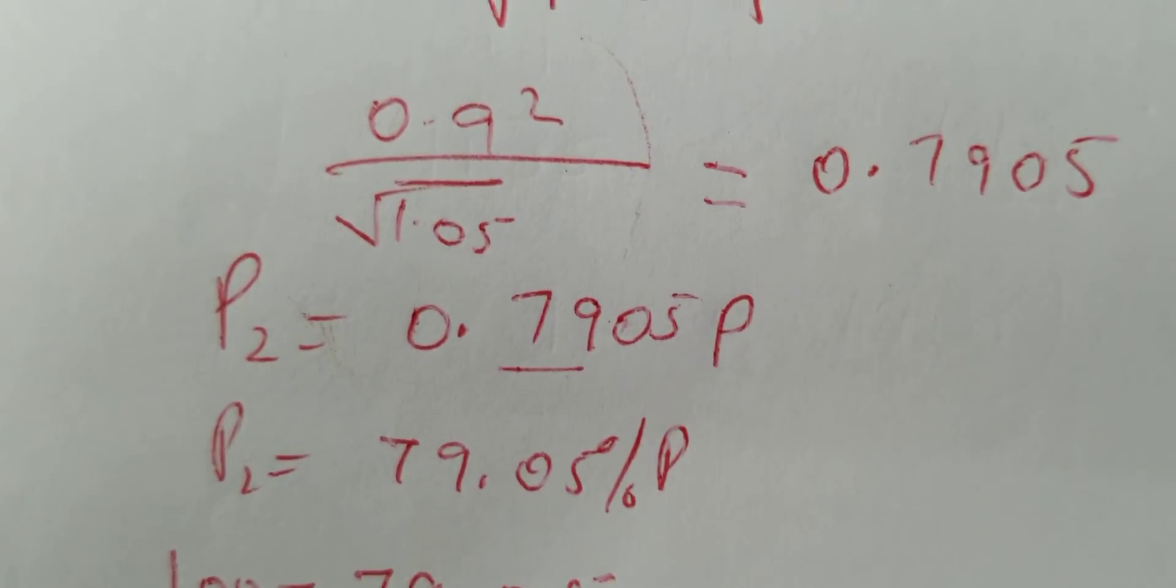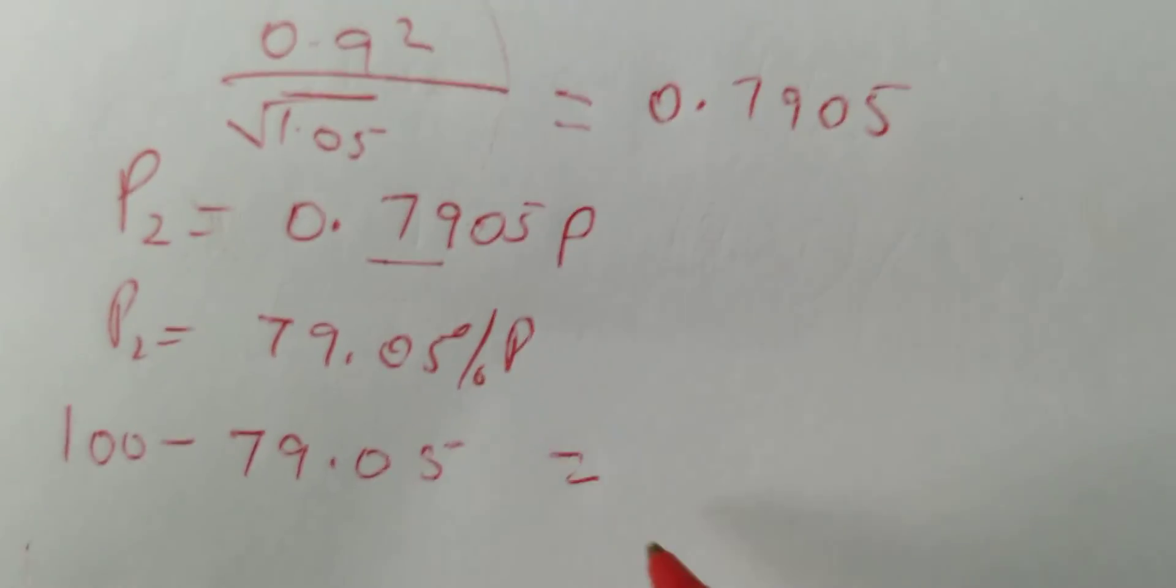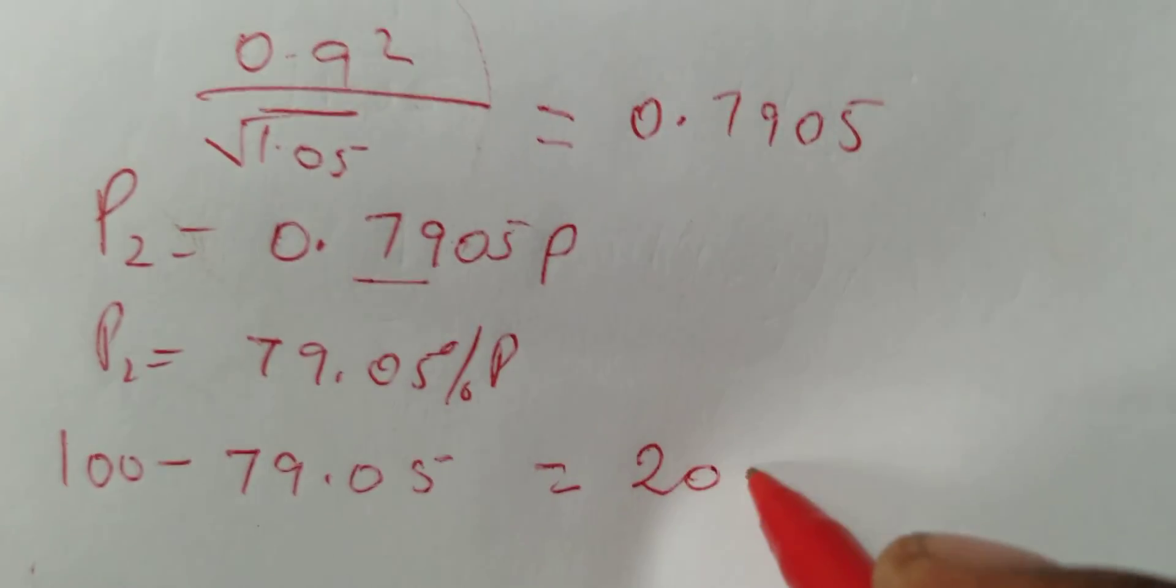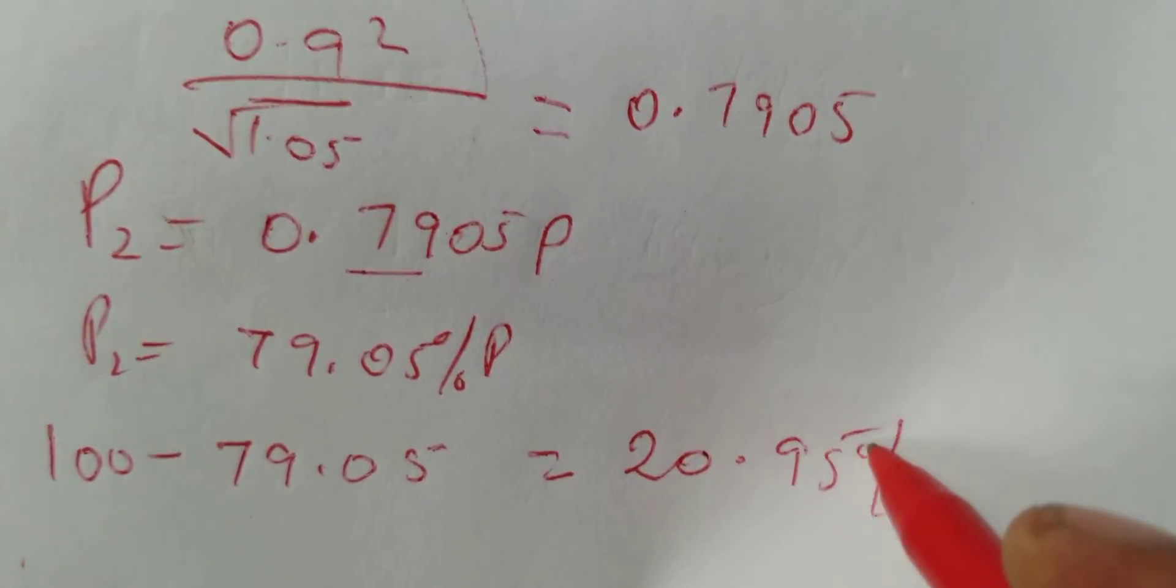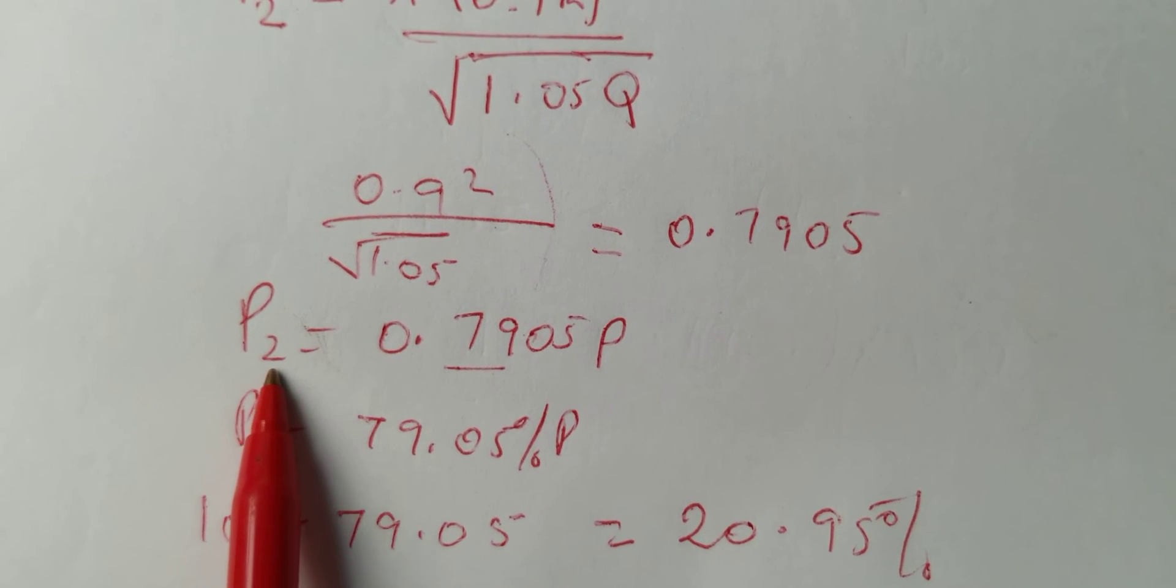And it's going to be equal to 20.95 percent. You realize that the second P is less than the original, so this is a decrease.